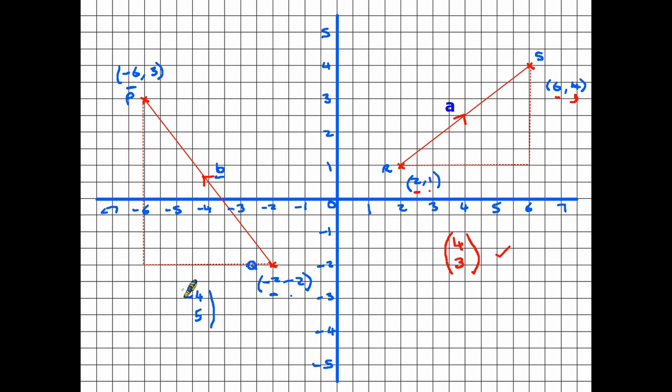So describing this vector as a column vector, it's (-4, 5). We don't have to say whether it's going left or up or down. The minus numbers do it for us. This is clearly moving to the left because of the -4, and then it's going up because of the 5. So vector b is described as (-4, 5).